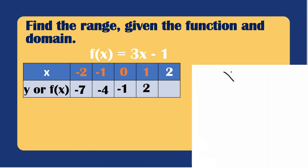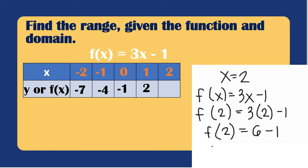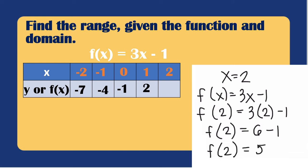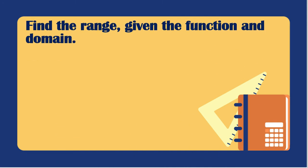Last one: if x = 2, using f(x) = 3x − 1, we get f(2) = 3(2) − 1 = 6 − 1 = 5. So the value of f(x) when x = 2 is 5. Our complete range is {-7, -4, -1, 2, 5}.